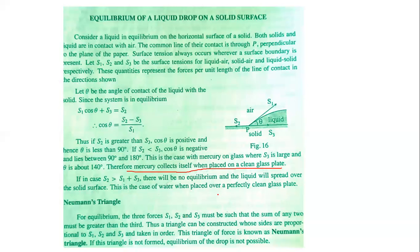The Neumann triangle condition: three forces S1, S2, and S3 must be such that the sum of any two must be greater than the third. Thus, a triangle can be constructed whose sides are proportional to S1, S2, S3 taken in order. This triangle of forces is known as the Neumann triangle. If this triangle cannot be formed, the equilibrium of the drop is not possible.